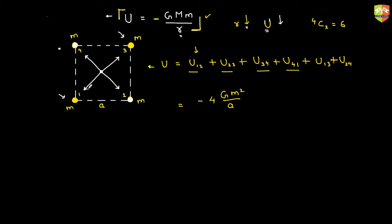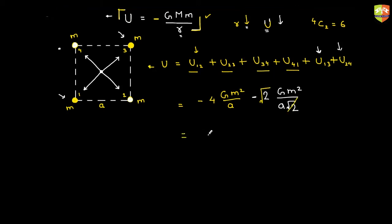The potential energy between one and three — the diagonal distance is a root two, same for two and four. So u13 equals u24 equals minus G m squared by a root two. Combined, these two diagonal terms give minus two times G m squared by a root two, which simplifies to minus four plus root two, times G m squared by a.